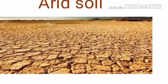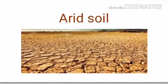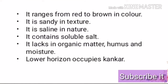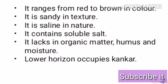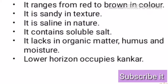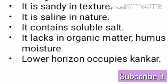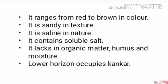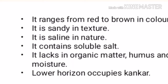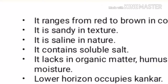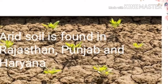Next is the arid soil. Arid soil ranges from red to brown in color. It is sandy in texture and saline in nature. The soil contains a high percentage of soluble salts, and there is a lack of organic matter. Soil also lacks humus and moisture. There are kankers in the lower horizon of the soil. These soils can become cultivable if irrigation facilities are available.